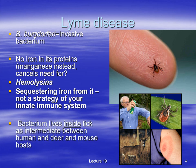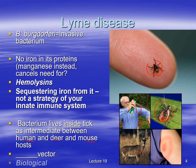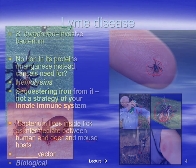The bacterium lives inside a tick, which is its vector. The tick is a biological vector — the bacterium is inside the tick's body fluids. It takes bacteria from the blood of mice, deer, and humans. You can imagine the tick taking the bacterium from one host — a deer or mouse — to a human being. That's why you see people spraying themselves with repellent to keep ticks away.